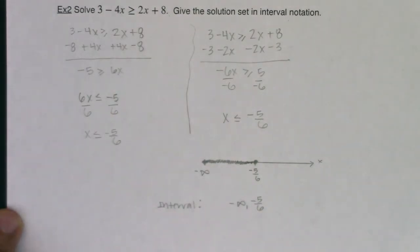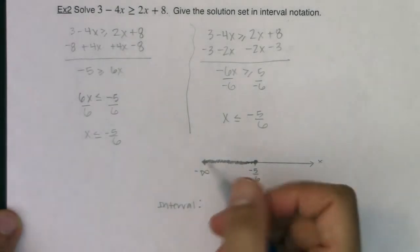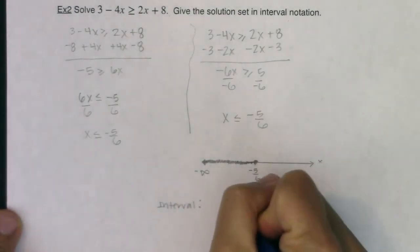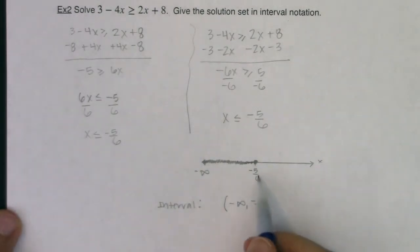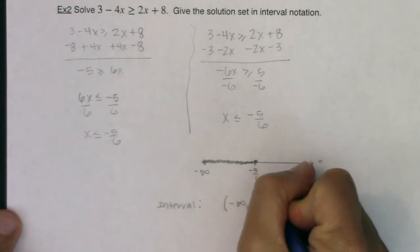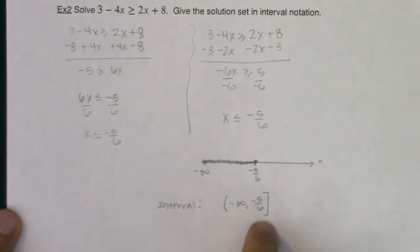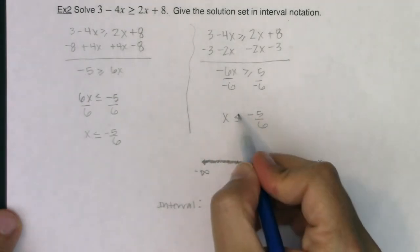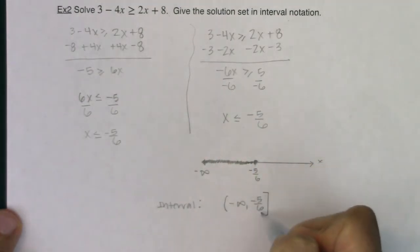Now we have to decide, do we want parentheses or brackets? Anytime you have an infinity, whether it's positive or negative, put the parentheses. For negative 5/6, if it has a closed dot, you want to put a bracket to include it in your answer. If this was open because this had been a strictly less than symbol, I would have put the parentheses because I did not want to include it in my answer.